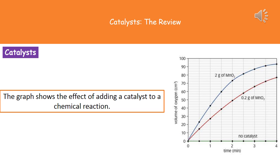The last thing we've got here is just a picture of the kind of graph you might see on your exam to do with the catalyst. All we've got on there are three different lines. The green line at the bottom shows our rate when we've got no catalyst added, and you can see that we've made zero centimetres cubed of gas over the four minutes. If we added 0.2 grams of our catalyst, the red line shows that steady increase in the rate.